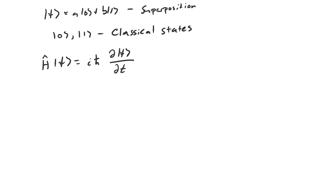Why does an observer have a special role in quantum mechanics? What constitutes an observer? What constitutes measurement? These are really interesting questions that we're not going to get into. You can read more about interpretations of quantum mechanics if it sounds interesting to you. Most of this has more to do with the philosophy of quantum mechanics than with the actual formalism itself.